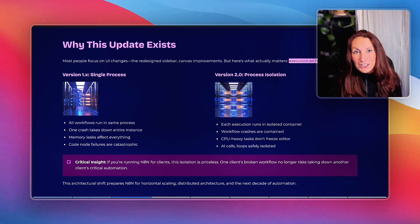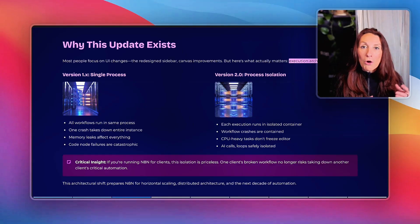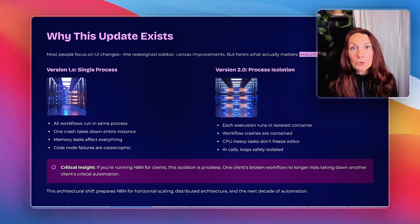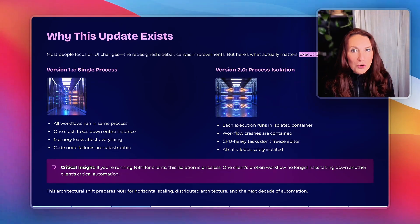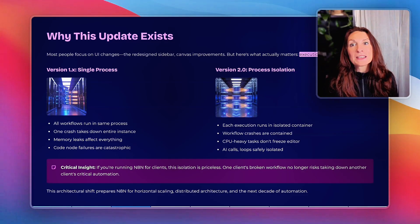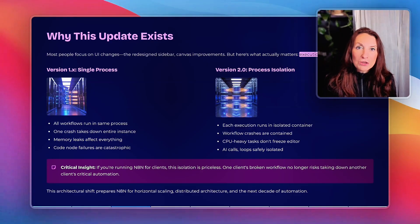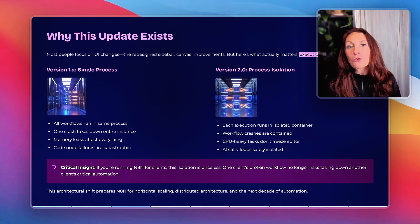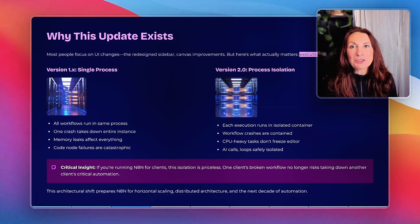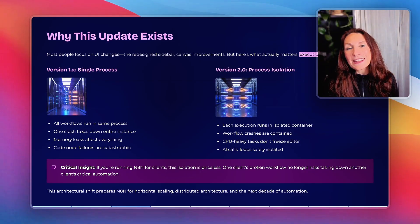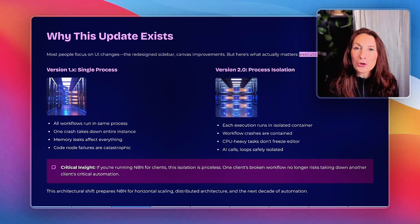After, in V2, each execution runs in an isolated container. Workflow crashes are contained — they don't cascade. CPU-heavy tasks don't freeze your editor. AI calls, long loops, large data processing — all safely isolated. This is the foundation for horizontal scaling, distributed architecture, and enterprise-grade reliability. This architecture shift prepares n8n for the next decade of automation.